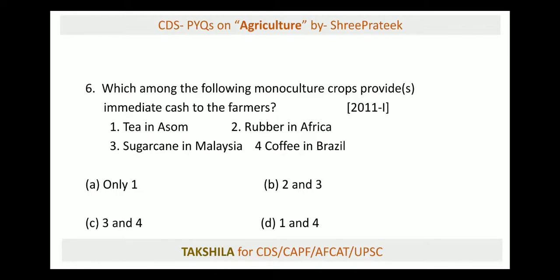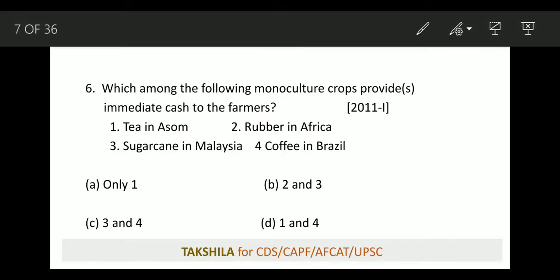Next: which monoculture crops provide immediate cash to farmers — i.e., cash crops? Rubber is clearly a cash crop, coffee is a cash crop, and sugarcane is also a cash crop. Among these, tea and coffee give you immediate cash because you harvest and sell them. Otherwise, all of these — beverages like coffee and tea, rubber, and sugarcane — are basically cash crops.